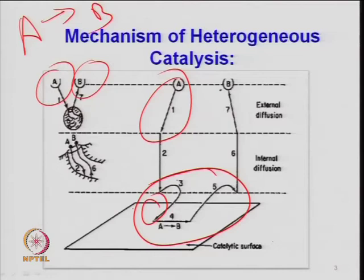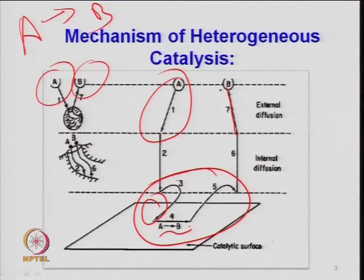This is chemical adsorption — chemisorption — and because of chemisorption, surface diffusion and several steps may take place. Then the reactant transforms into product B. Once the product forms, because of the concentration gradient it goes out of the pore. The product molecule then comes from the pore surface to the bulk gas. All these steps will be involved when you have a catalytic reaction, and each step will have its own resistance — mass transfer resistance, diffusion resistance, and catalytic/kinetic resistance.